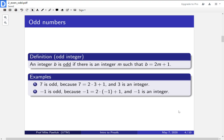Now let's look at odd numbers. An integer is odd if there's another integer m such that the first one is 2 times the second one plus 1. Let's look at examples. 7 is odd because 7 is 2 times 3 plus 1, and 3 is an integer. Minus 1 is odd because minus 1 is 2 times minus 1 plus 1, and minus 1 is an integer. So the even ones are 2 times something, and the odd ones are 2 times something plus 1. These are the definitions we will use through this course.